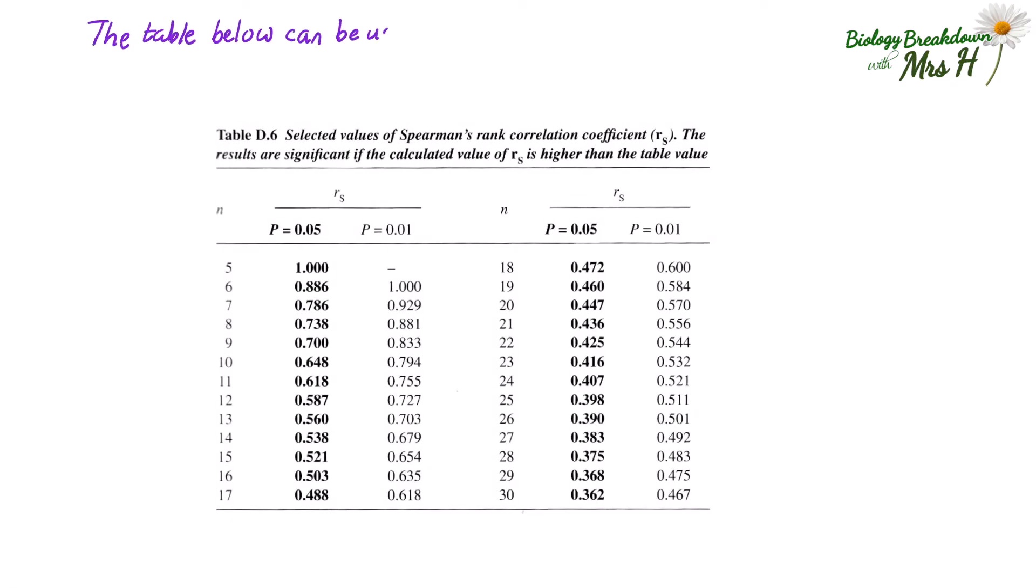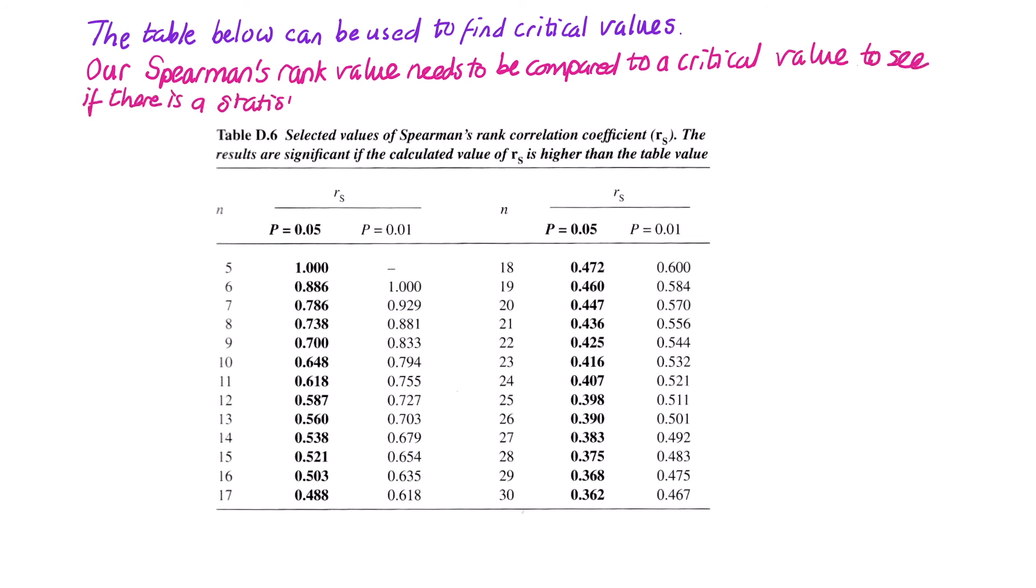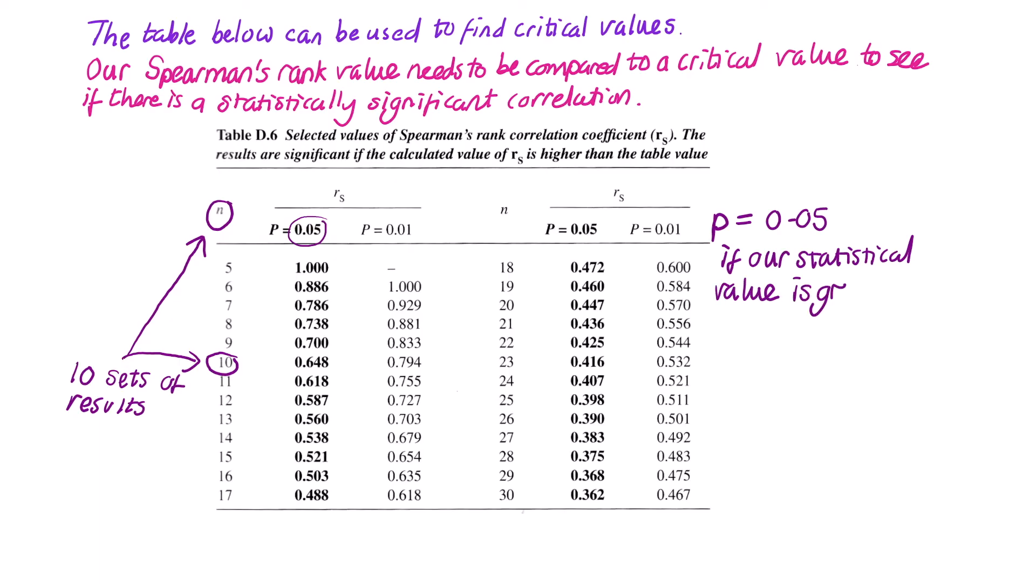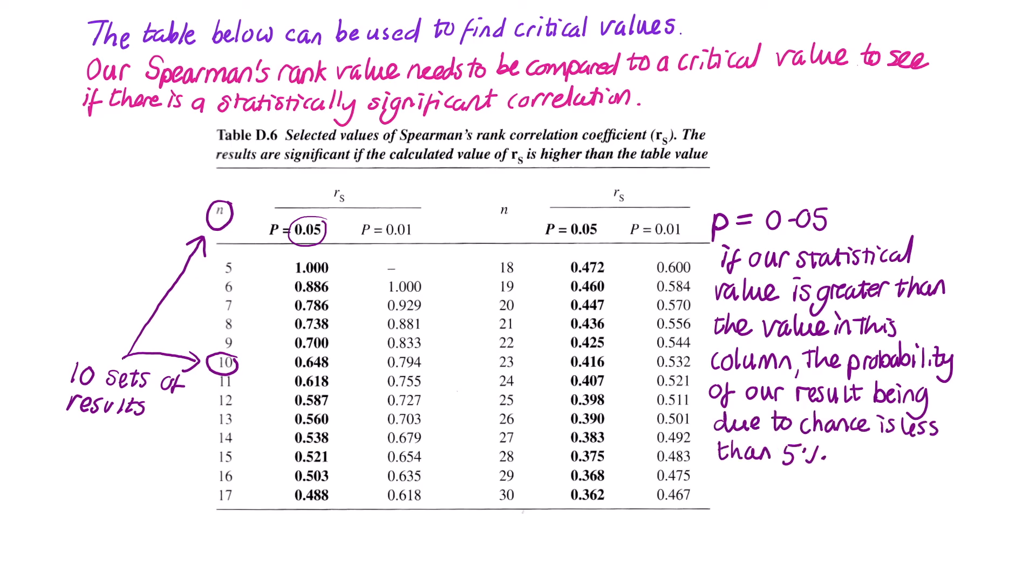The table below can be used to find critical values. Our Spearman's rank value needs to be compared to a critical value to see if our results are statistically significant. In other words, is there a significant correlation? We had 10 sets of results, so n is 10. In biology, we use p equals 0.05. This means if our statistical value is greater than the critical value in this column, the probability of our results being due to chance is less than 5%, so the correlation would be very significant. Our critical value is 0.648.